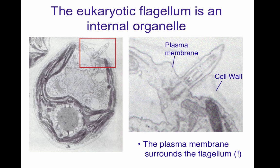In this image, we have a picture of Chlamydomonas, which is a ciliated protist — an alga. It has chloroplasts with chlorophyll, and these small algae are motile; they have a flagellum. The formation of the flagellum happens internally and within the plasma membrane. The plasma membrane goes around the structure of the nascent flagellum, and the flagellum also protrudes outside of the cell wall. So both cilia and flagella are internal organelles.